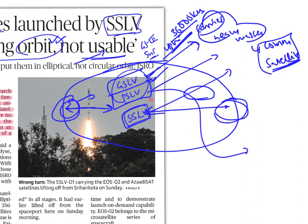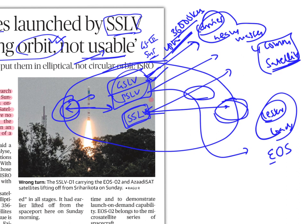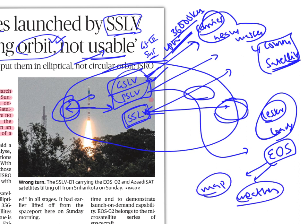PSLV carries lesser loads compared to GSLV — generally up to 1,000 to 1,400 kilometers from Earth, not very far. PSLVs generally carry Earth observation satellites, which are used to predict weather, help in mapping, and identify different resources on Earth. Communication satellites are carried by GSLV; smaller Earth observation satellites are carried by PSLV.